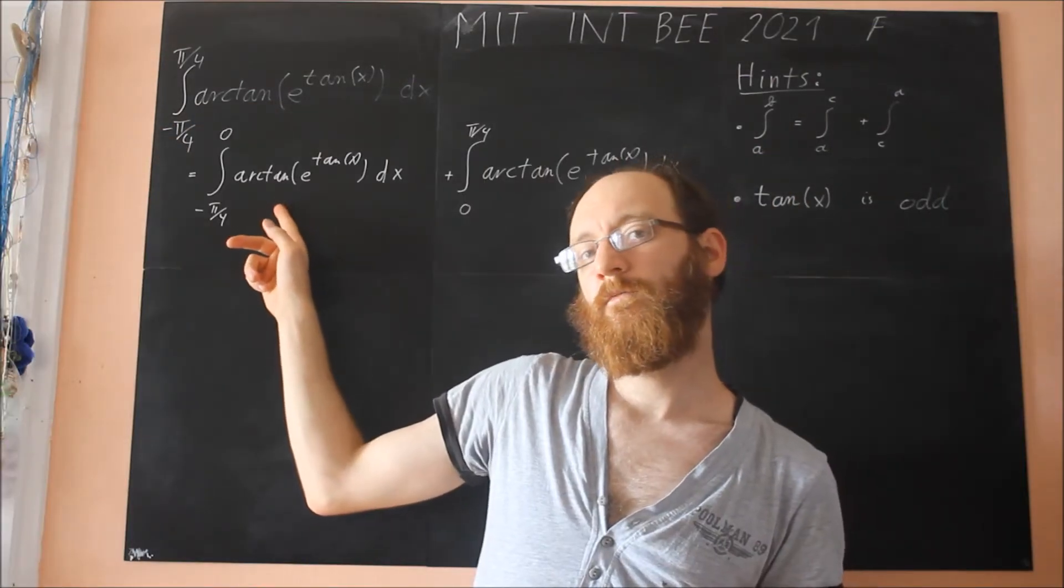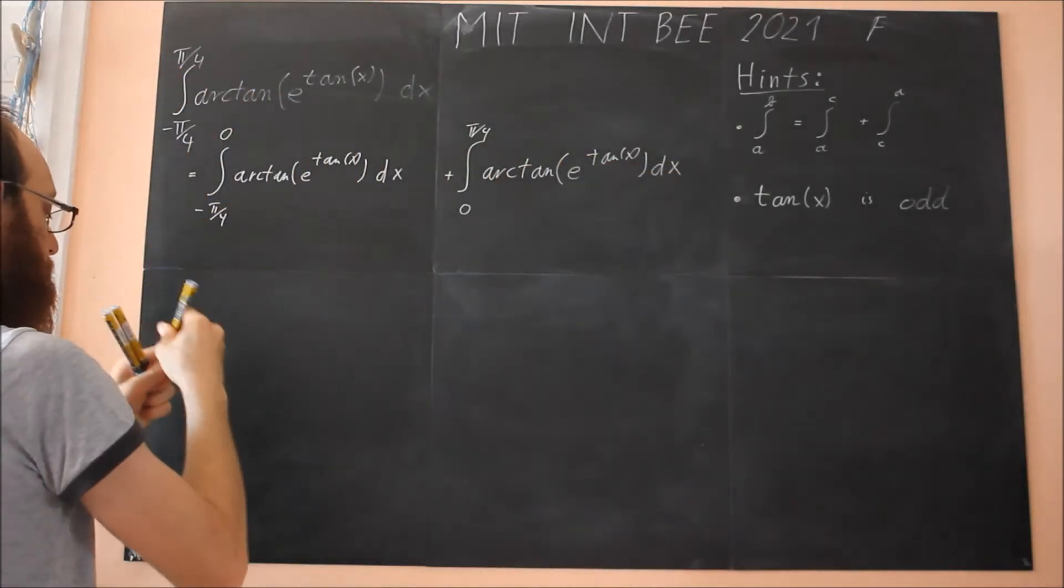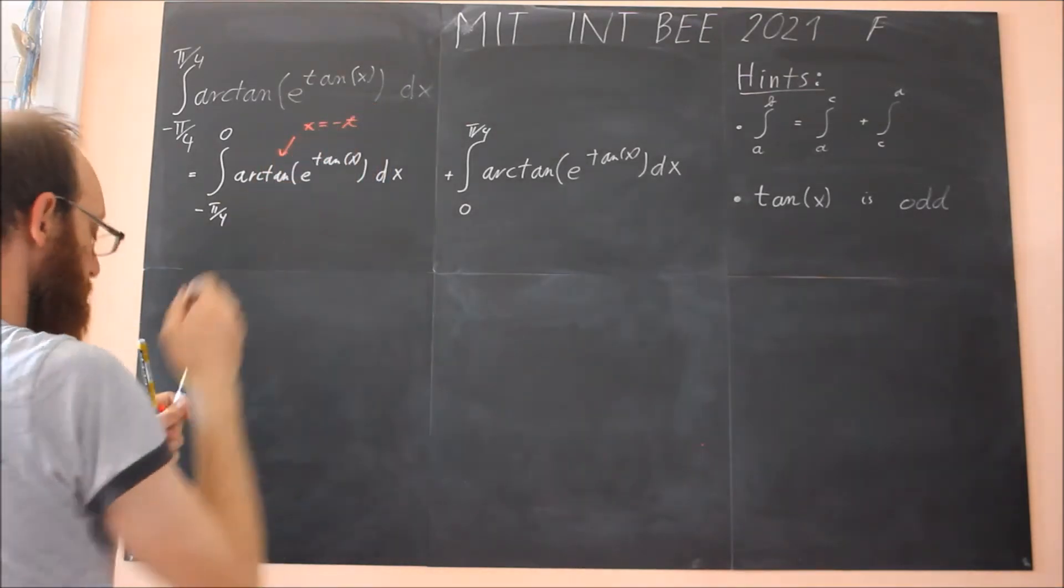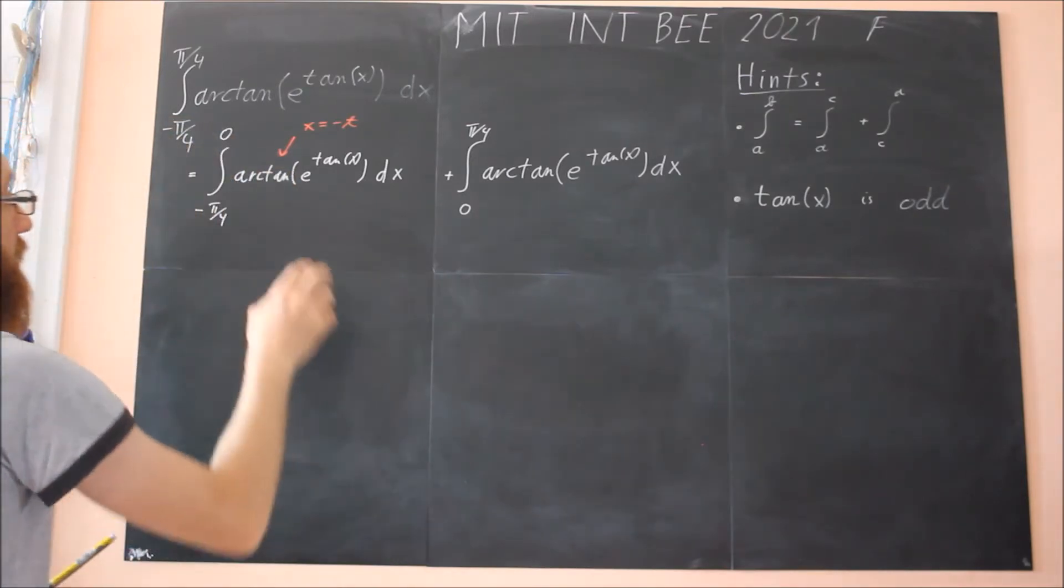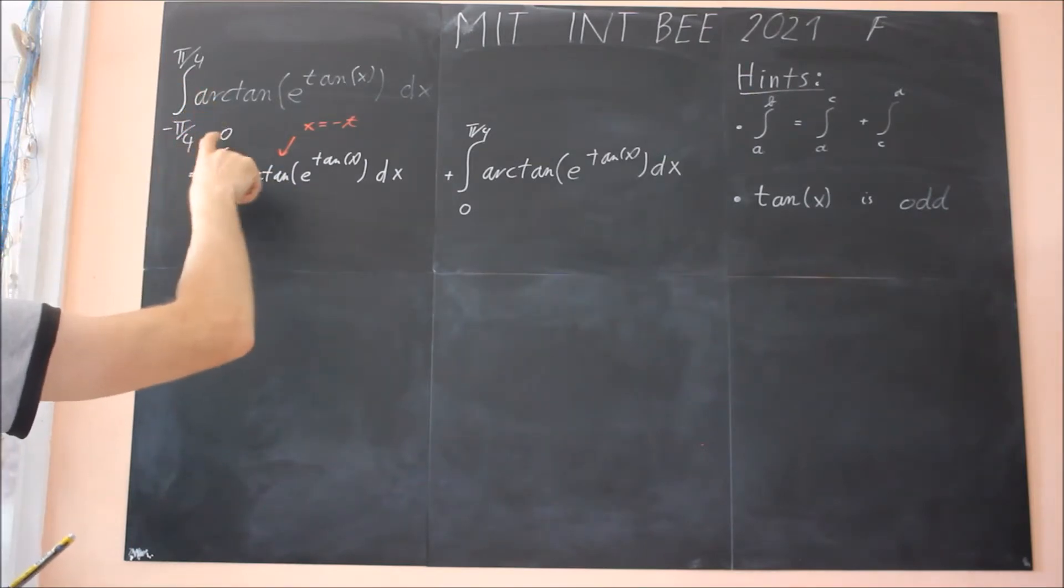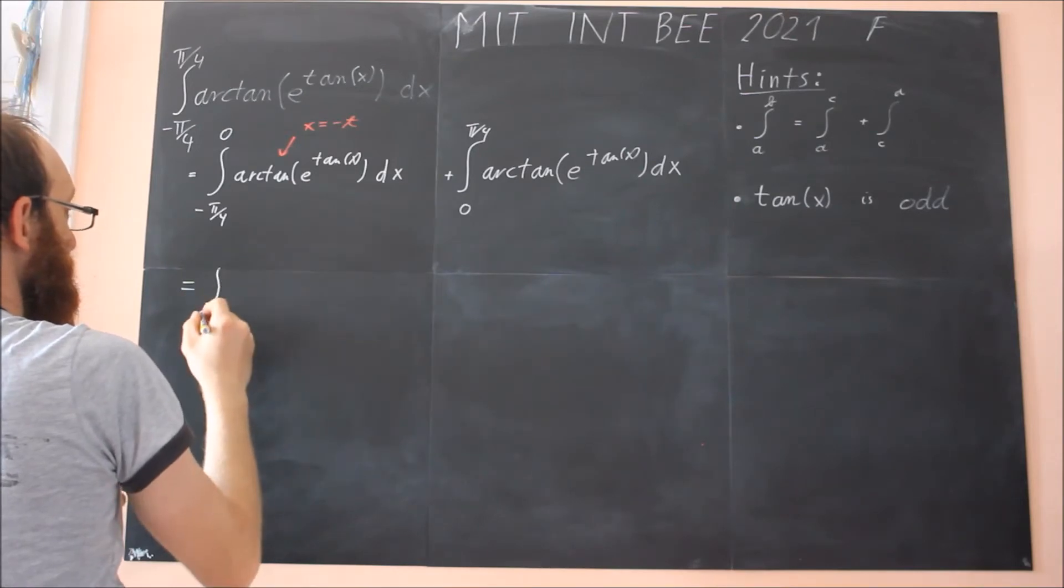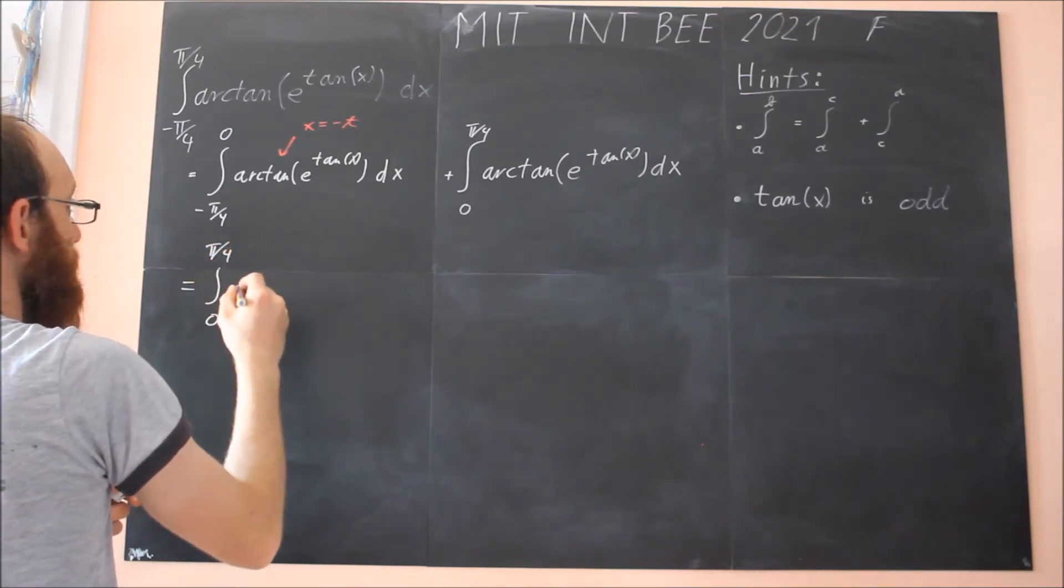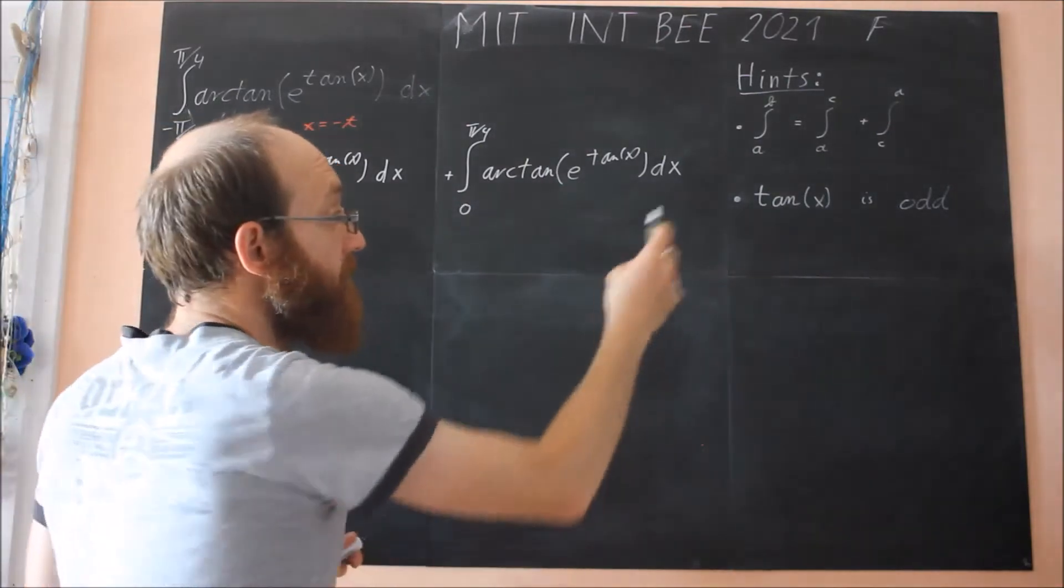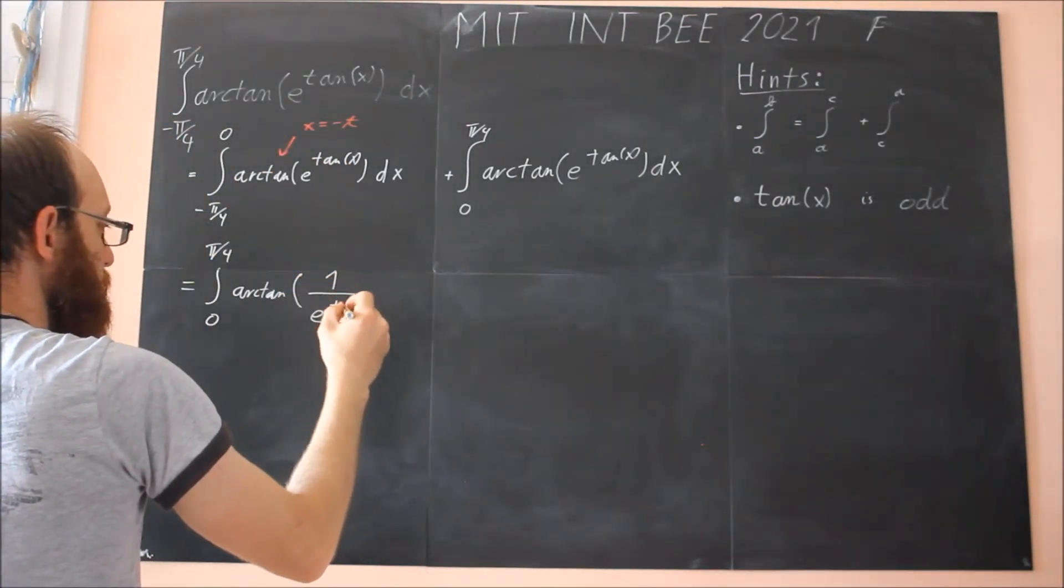The left integral, we make a substitution. So x is minus t. Here we make a substitution, x is minus t. And if you do that, we get minus dt. So with the minus, we switch the boundaries and the signs are changing. So we get from zero to pi over four, inverse tangent e to the tangent of minus x. And tangent is an odd function. So we get one over e to the tangent of x.